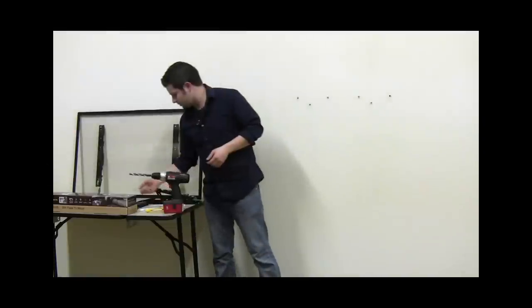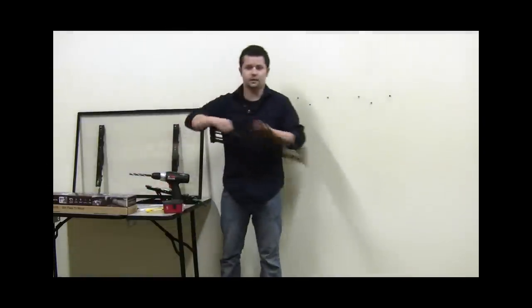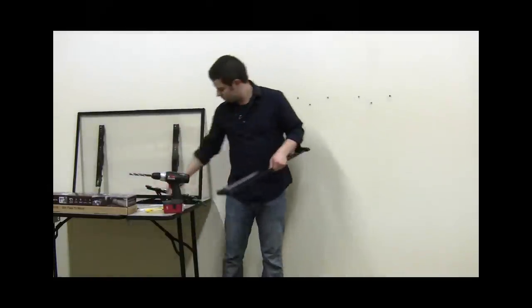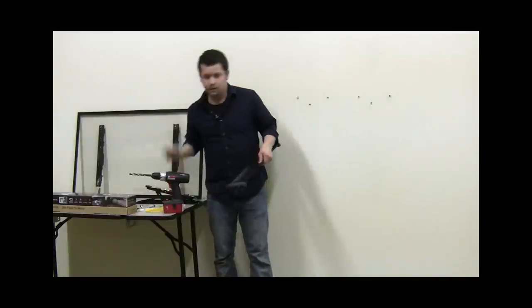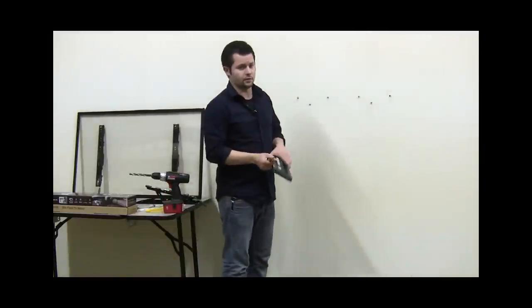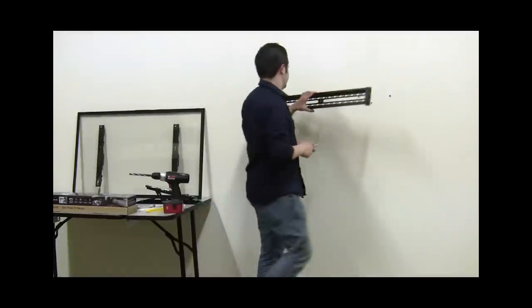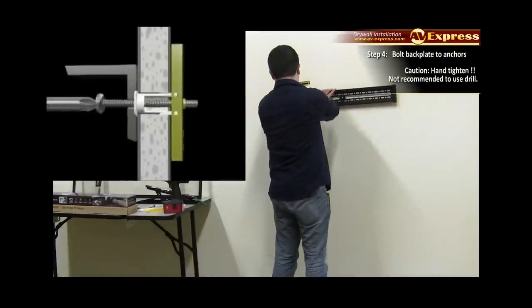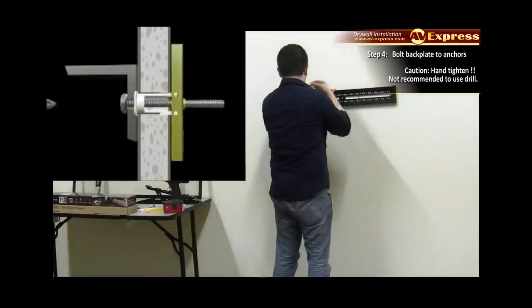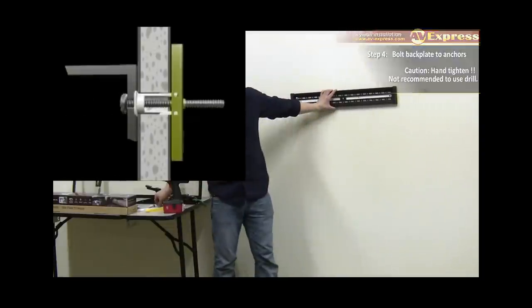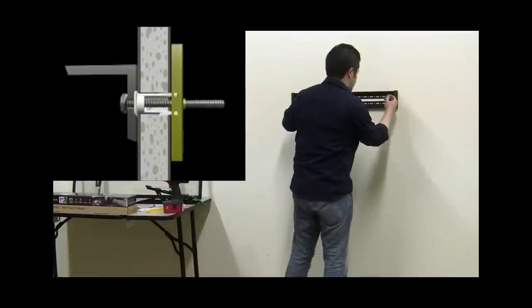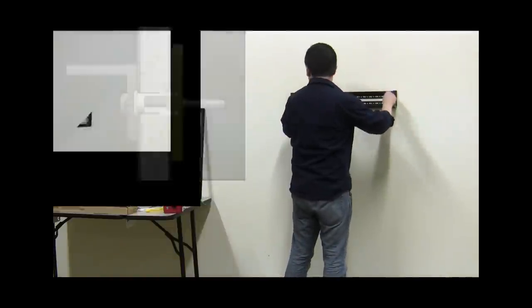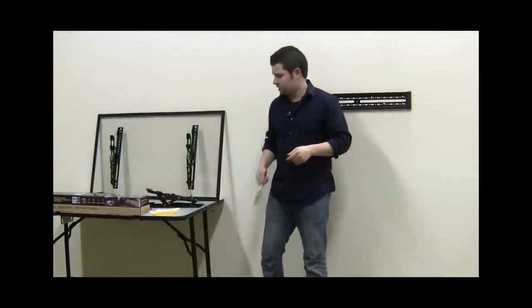The next step after installing all of the drywall anchors is to hang the adapter plate on the wall. We recommend hand tightening these and not using a drill to install.